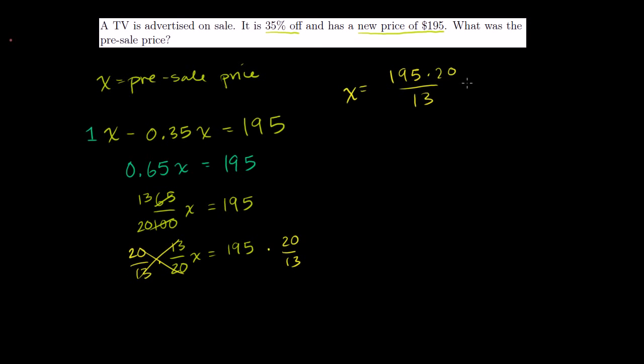So you see, you get 195 times 20 divided by 13 is equal to $300. I should have done that. So this is equal to $300. So 195 is actually divisible by 13. I should have been able to do that without a calculator. Anyway, so the original price was $300. You take 35% of $300, which is $105, and you will be left with $195. So that was our original price.